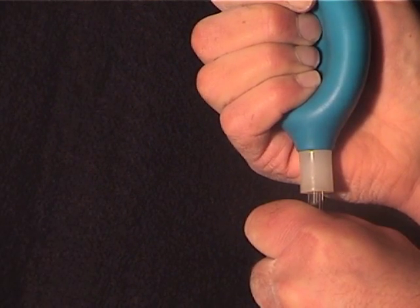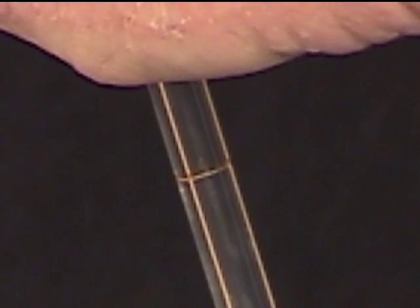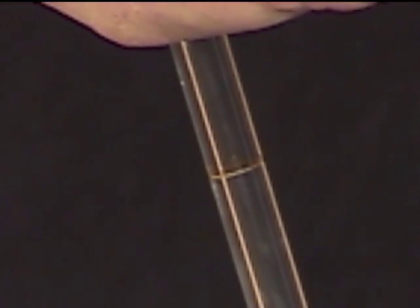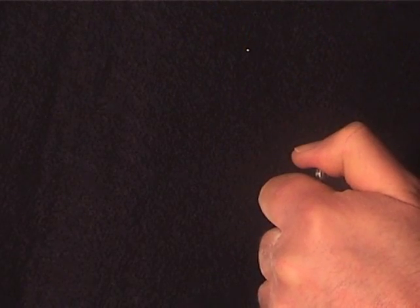Allow the rubber bulb to expand to draw the liquid sample into the pipette. Let the liquid's level pass the etched mark on the pipette, then quickly remove the bulb and seal the top with your thumb.